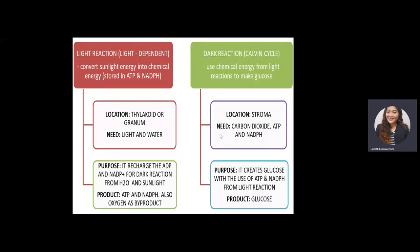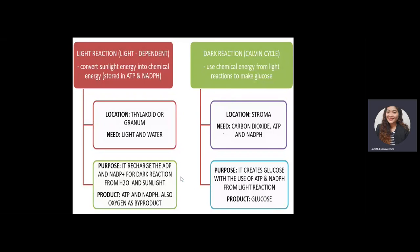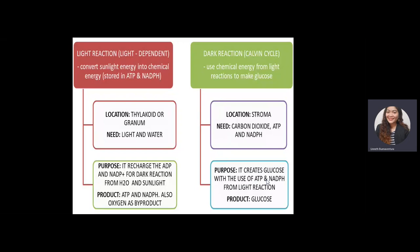The inputs for the dark reaction are carbon dioxide (CO₂), ATP, and NADPH — any products produced in the light reaction. The purpose of the dark reaction is to create glucose using ATP and NADPH. The product of this process is glucose, C₆H₁₂O₆.